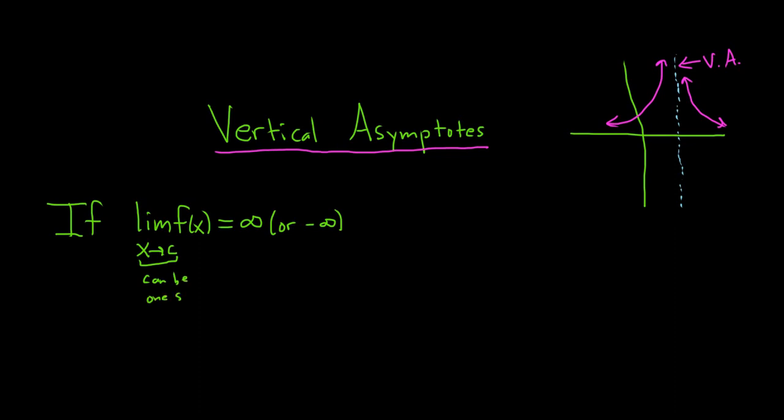And by the way, this can be a one-sided limit, so it can be one-sided. Maybe it just approaches from the left, or simply from the right. If we take a limit from any direction and we get infinity or negative infinity, then x equals c is a vertical asymptote for the graph of f.